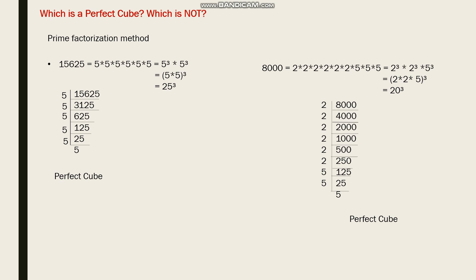So 5 into 3125, 625, 125, 25, 5. We have 6 fives, so I can write it as 5³ × 5³. That's (5 × 5)³, which gives 25³. I say this is a perfect cube.